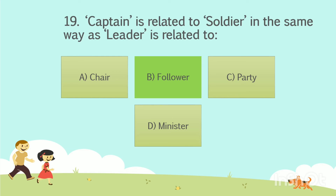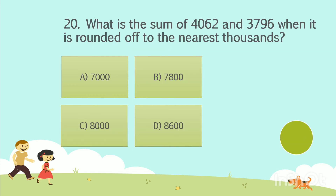Captain is supposed to lead the battalion of soldiers, in the same way as a leader is supposed to lead the followers. Question No. 20. What is the sum of 4062 and 3796 when it is rounded off to the nearest thousands? Option A: 7000. Option B: 7800. Option C: 8000. Option D: 8600. Your time starts now. The answer is Option C: 8000.